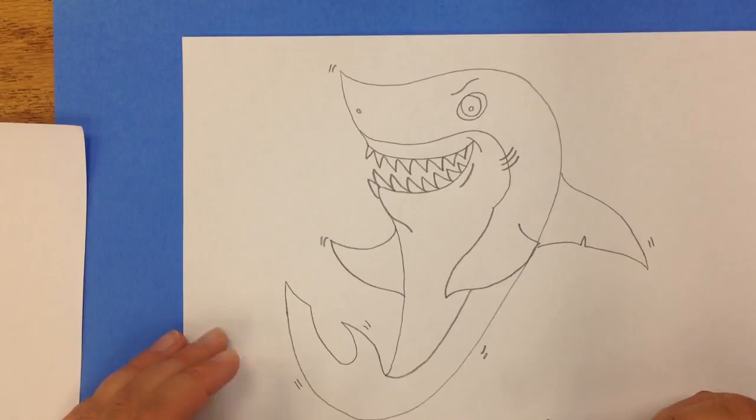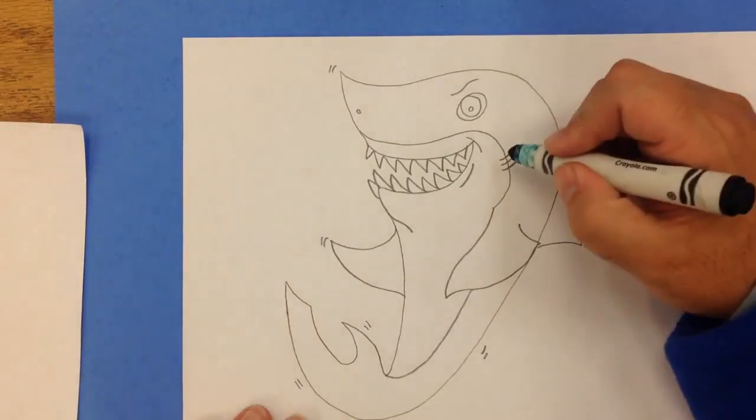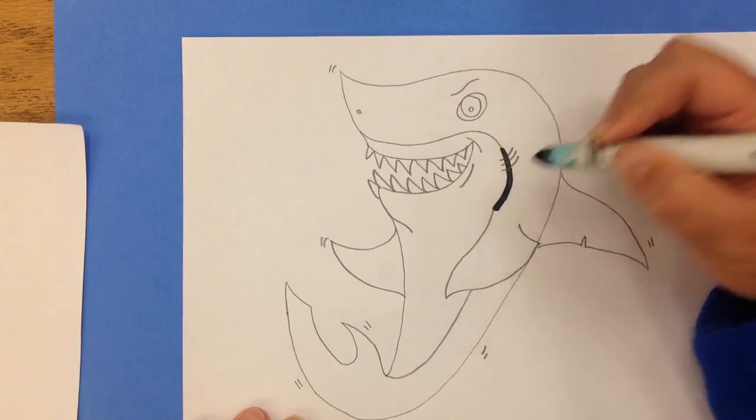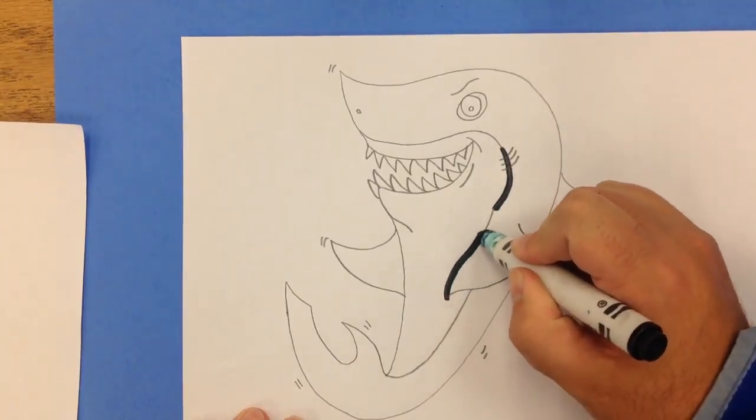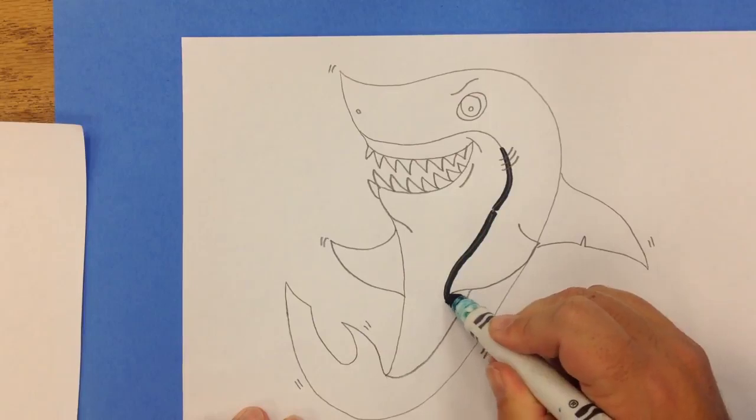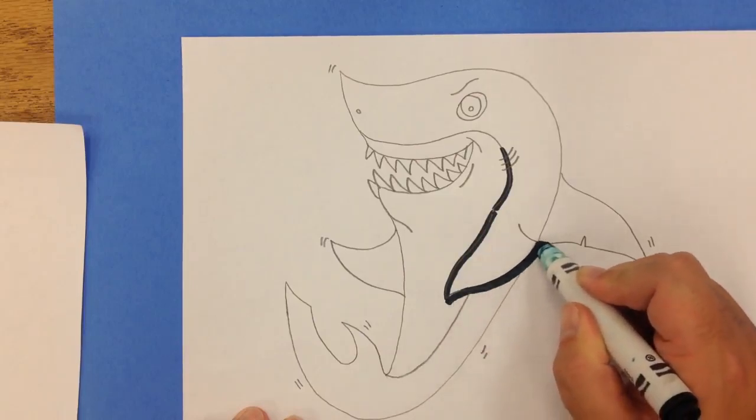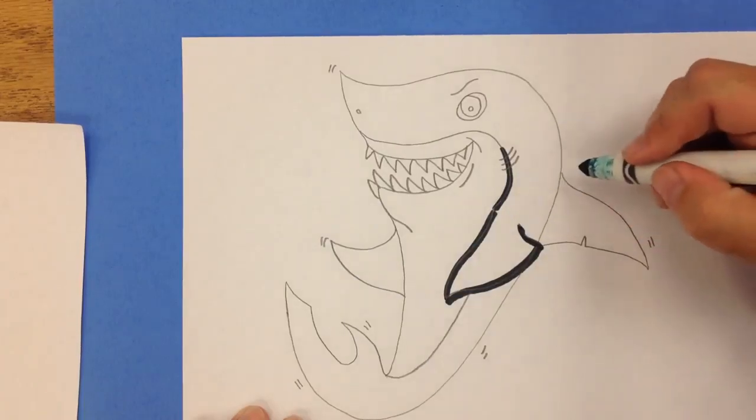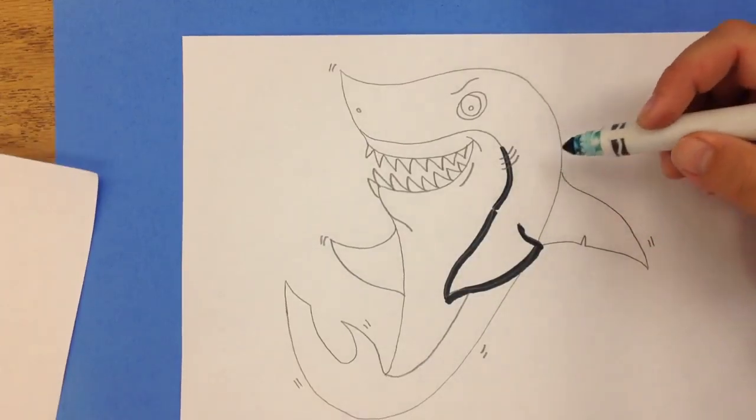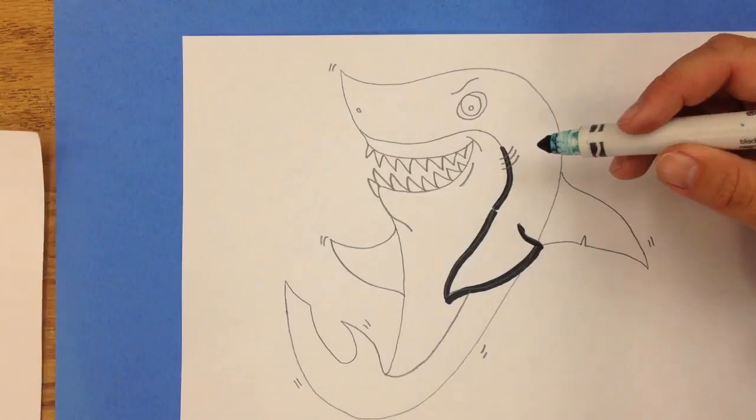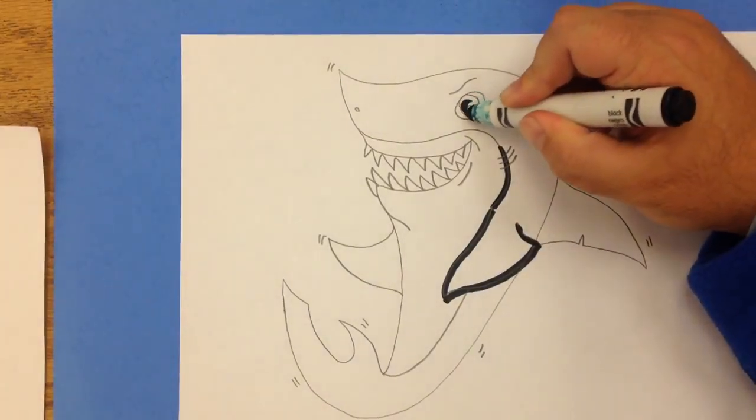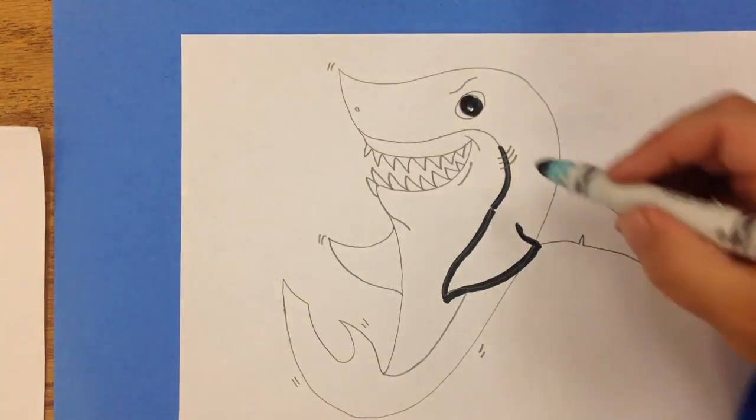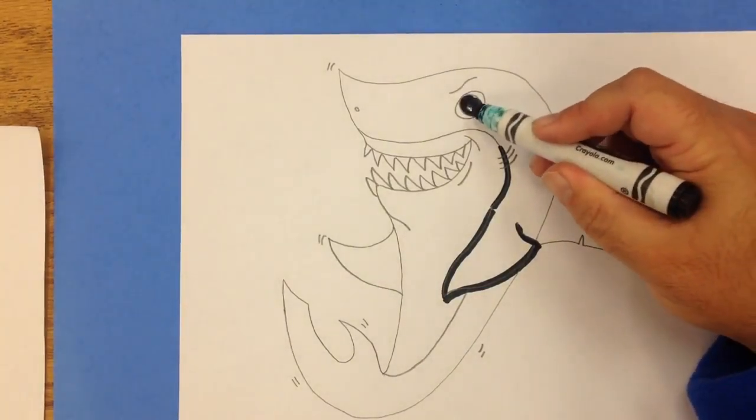My next step is going to be to trace pretty much all of the lines I've drawn in black. And so when I finished going back over all of those lines and have also shaded in the center of the eye except for just a little bit of white.